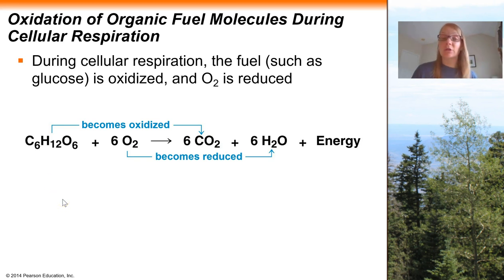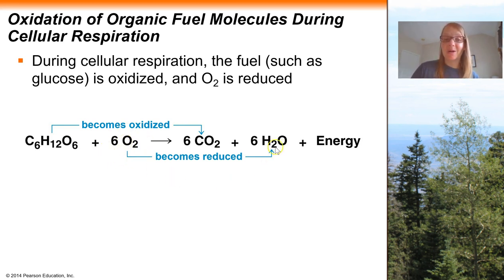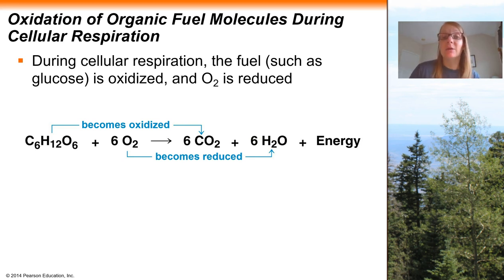The electrons have to go somewhere, so we can follow where the electrons — technically the hydrogen atoms — end up. They are eventually going to fall into the lap of oxygen to become water. If you add hydrogens to oxygen, you end up with H2O. So by following those hydrogen atoms, you can identify where the electrons are going to travel during the process of cellular respiration.